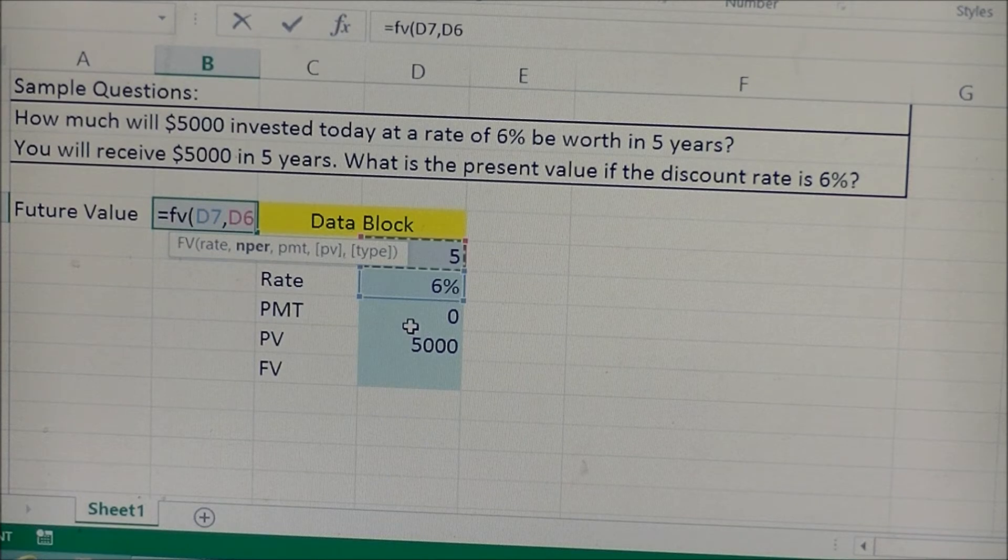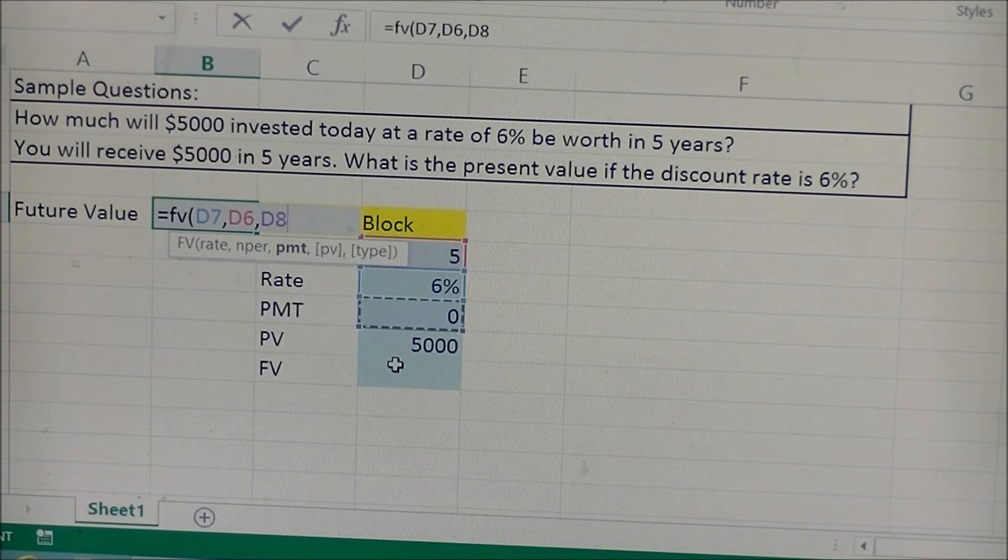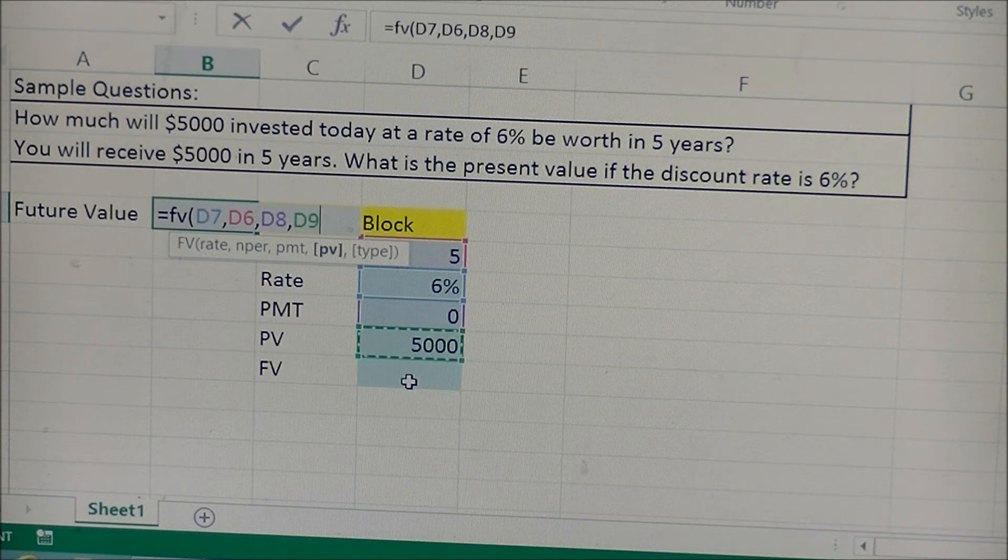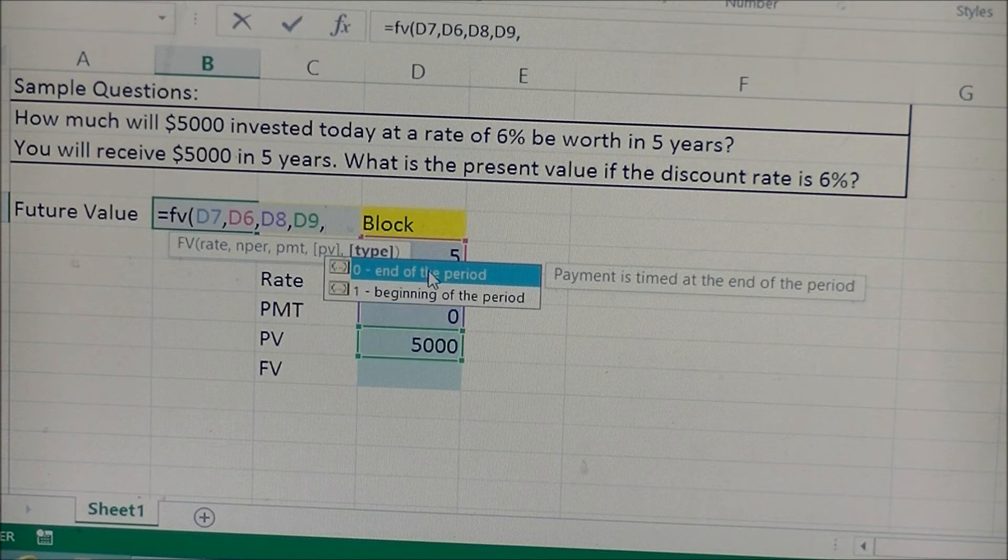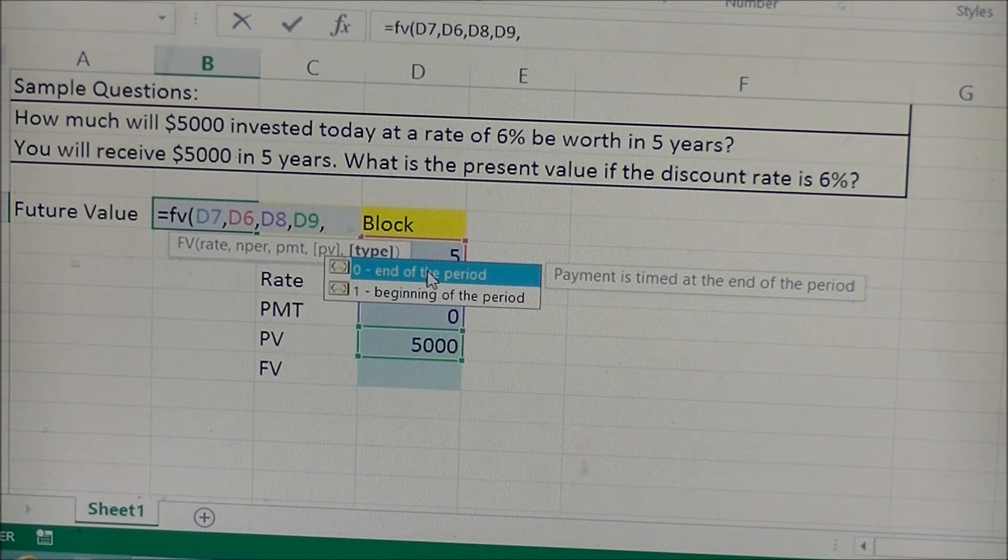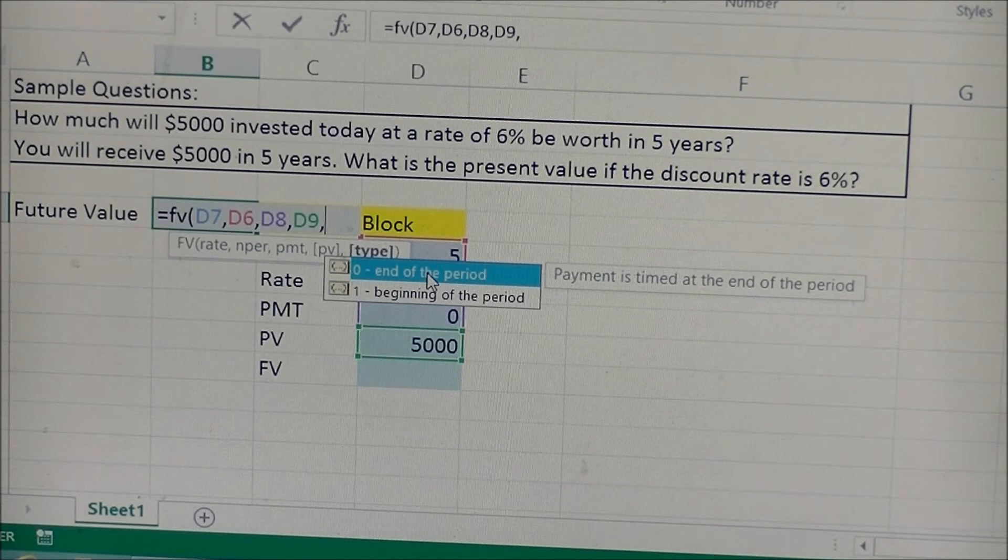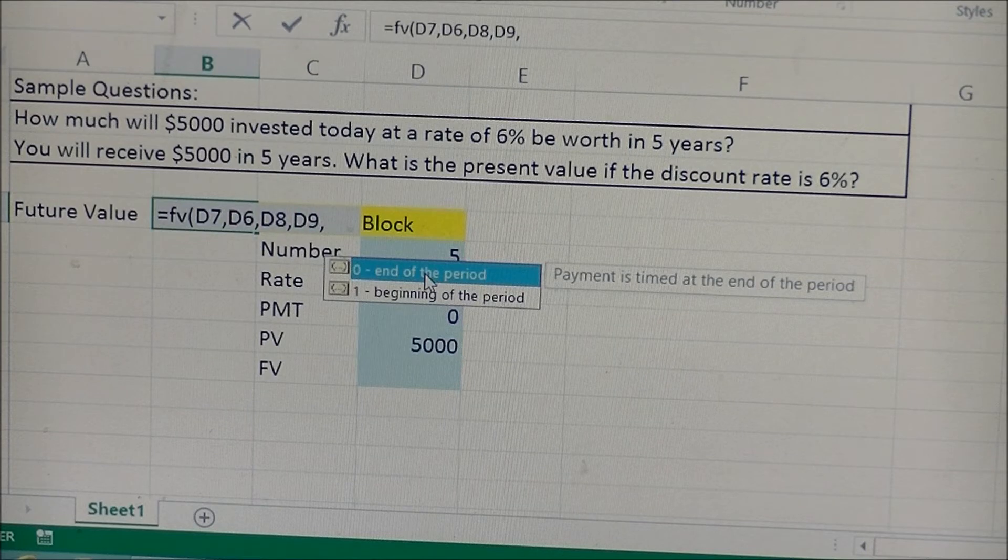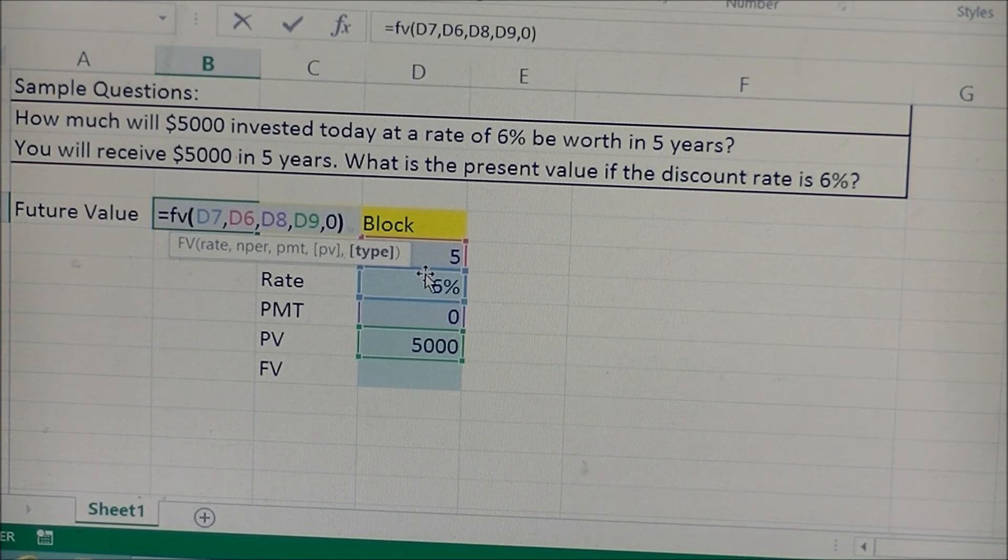So we'll put number of years right there. Next thing it's asking for a payment, we'll put that right there, and then it's asking for the present value, which is our $5,000, and then it's asking for type, and we're going to say at the end of the period, we want to know what it is at the end of five years.